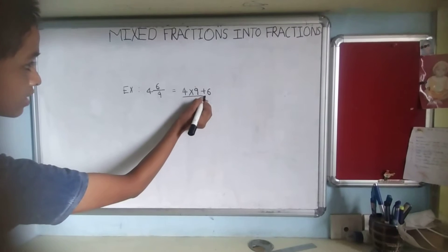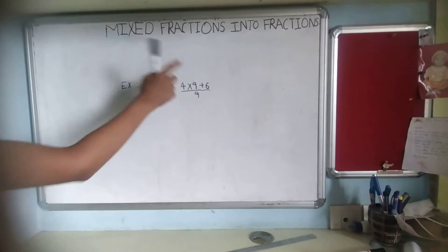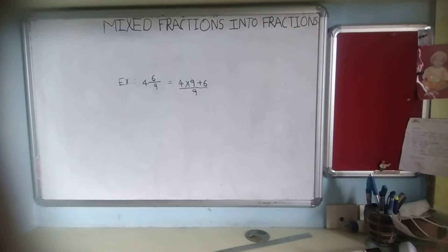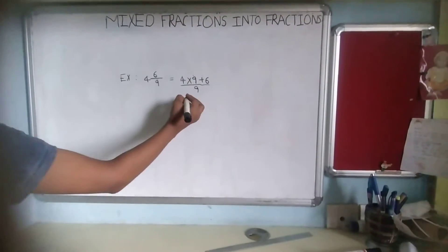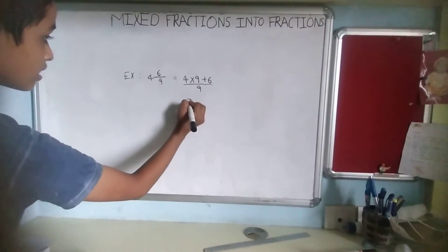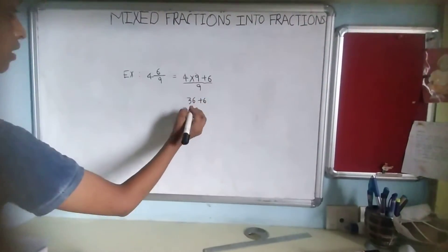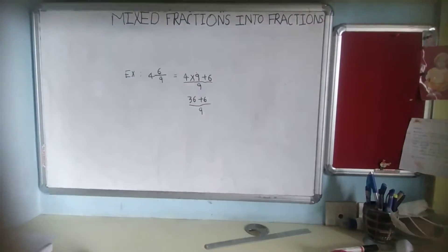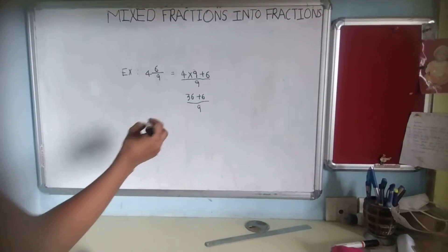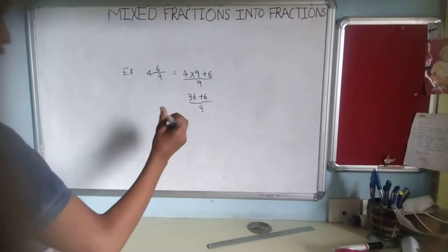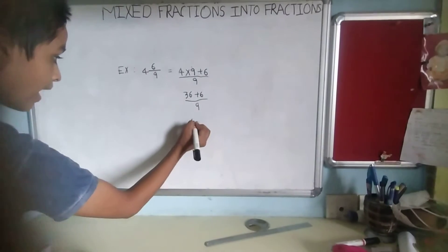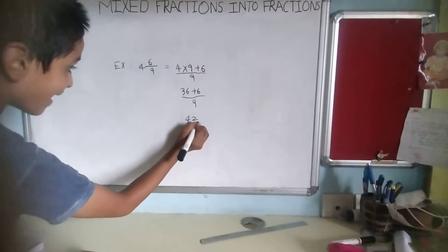And denominator is same 9, so I am writing here 9. Now 4 nines are 36. Now I am writing here 36 plus 6. Now it will be 42 and 42 by 9.